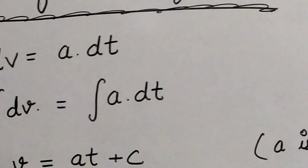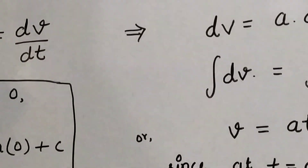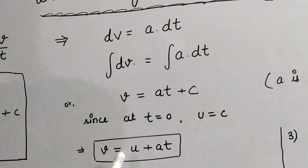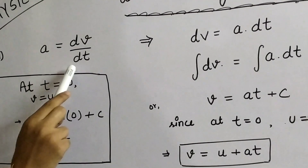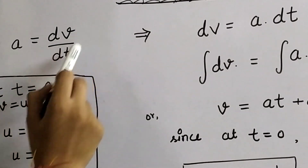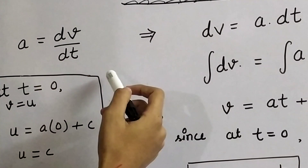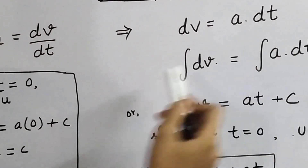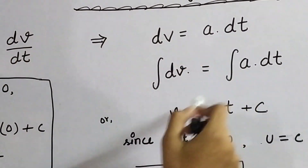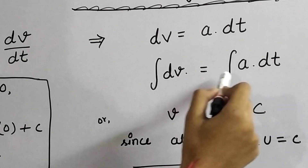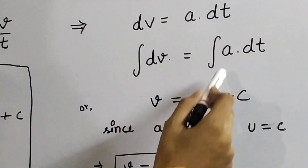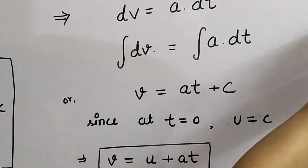First, let us derive the first equation, which is V = U + AT. To derive this equation, we will look at the basic definition of acceleration. We define acceleration by the derivative of velocity. So, we write A = dV/dt. In another form, we can write it as dV = A dt. Note that A is taken to be a constant in all these equations.